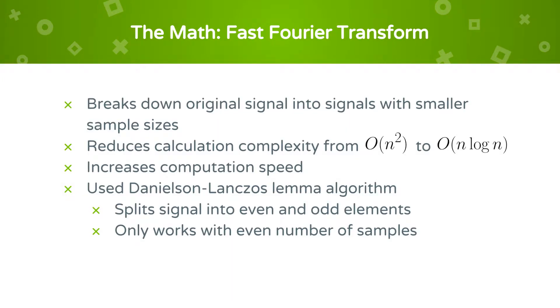There are many algorithms to compute the Fast Fourier Transform, all of which break down the original signal into signals with smaller sample sizes. This reduces the complexity of computing the discrete Fourier Transform of a signal with sample size n from O of n squared to O of n log n, and increases the computation speed.